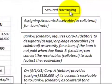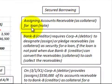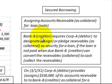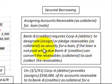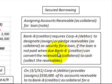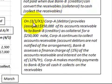Here we're going to be looking at Secured Borrowing, where we assign accounts receivable as collateral for a loan or note. Bank B, the creditor, requires Corporation A, the debtor, to designate or assign or pledge receivables as collateral as security for a loan. So if the loan is not paid when due, Bank B can convert these receivables to cash and collect on them.